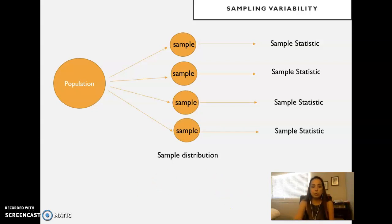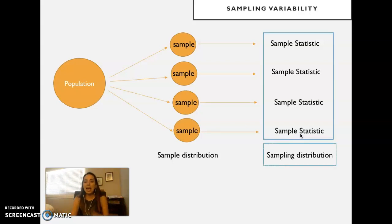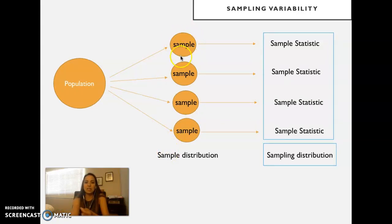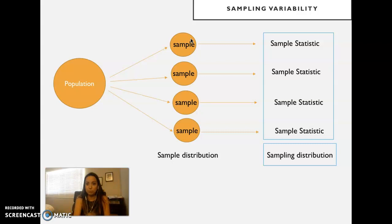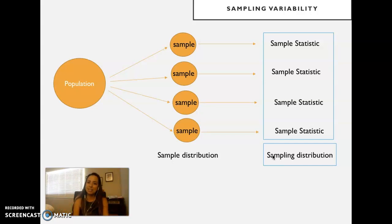But if we compute the sample statistic over and over again — say a thousand times, like we did with the random experiment — we then have a distribution of the sample statistic. That's called a sampling distribution. A sample distribution is how data distributes within one sample; a sampling distribution is what we get when we repeat the sampling process and look at the distribution of the statistic itself. We looked at the sampling distribution expected under random conditions when we ran the random experiment.